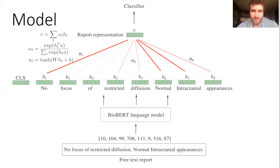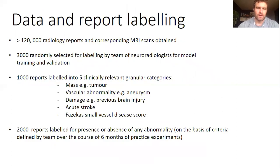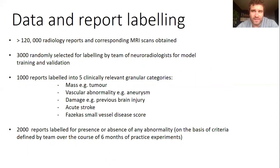Our model takes this weighted sum of embeddings as the vector representation of the radiology report, which is passed to a three-layer classification network that outputs the probability that the report describes one or more abnormality categories. We train the whole network — the classifier, the attention network, and BioBERT — end-to-end on the basis of binary cross-entropy loss between model predictions and report labels. For training, we obtained over 120,000 radiology reports and corresponding images: all adult MRI head examinations from King's College Hospital London over a 10-year period, from which we randomly selected 3,000 reports for labeling by our team of neuroradiologists.